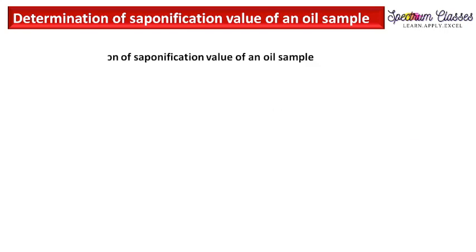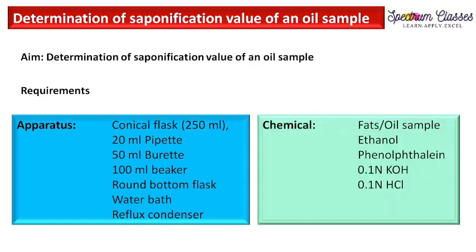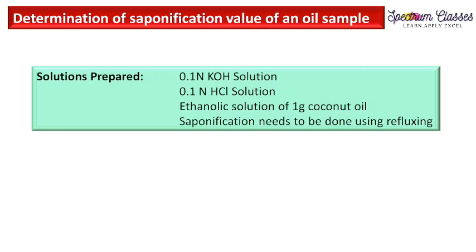Now, requirements — how we are going to perform this experiment, what glassware and other apparatus are used, and here are the chemicals required. The solutions we need are: an alcoholic solution of KOH — that means we dissolve the KOH in ethanol rather than water — 0.1 normal HCl solution, and an ethanolic solution containing 1 gram of coconut oil. You can use whichever fat or oil you have; just take 1 gram of that oil.